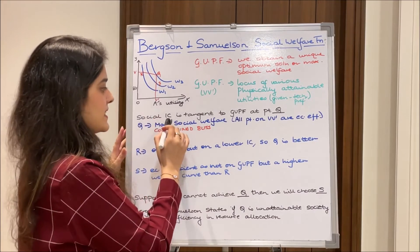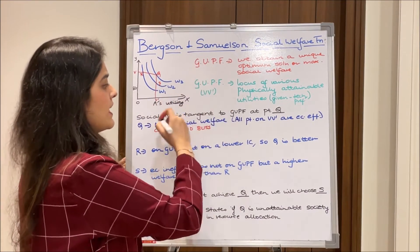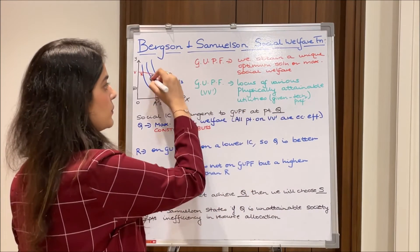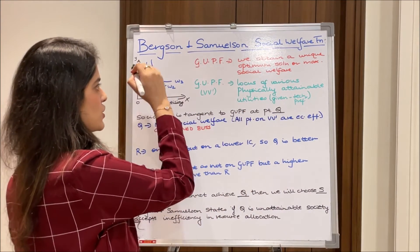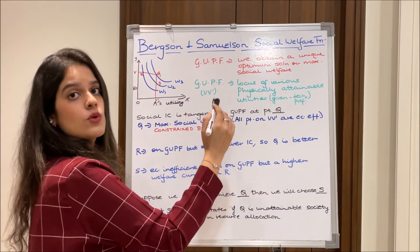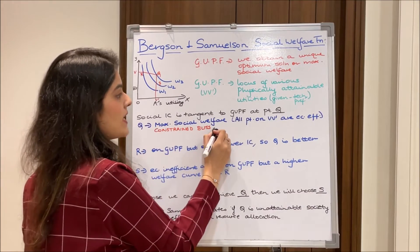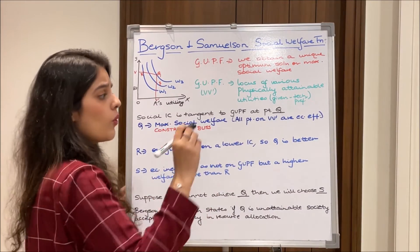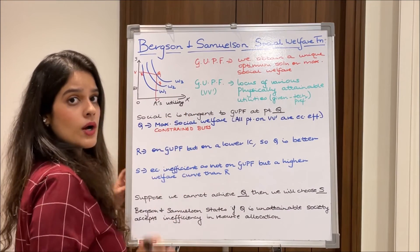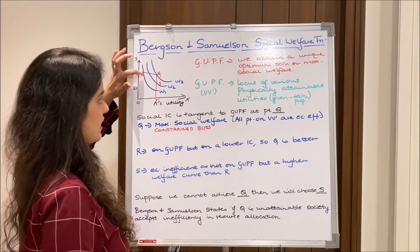A social welfare curve — as explained before, W1, W2, W3 — is tangent to the GUPF at point Q. At this point, it is tangent to the VV' curve, and Q is the maximum social welfare point, also known as the constrained bliss. All points on VV' are economically efficient.